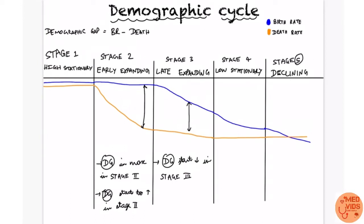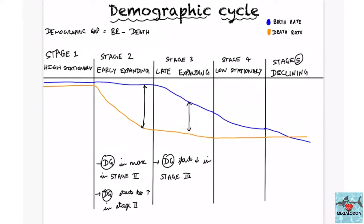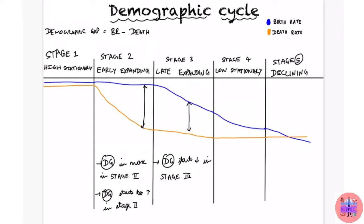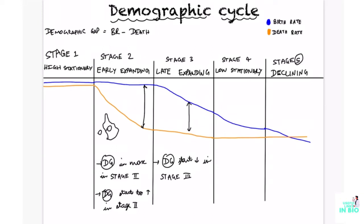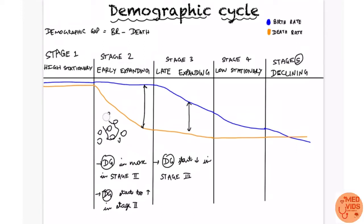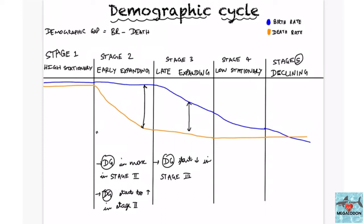Another important term is the demographic trap. In stage two of the demographic cycle, there is a very high birth rate but a very low death rate, causing the population to grow beyond what the country can accommodate. This exceeding birth rate combined with a decreased death rate traps all age groups within the country beyond its capacity, which is why the early expanding phase is also called the demographic trap.